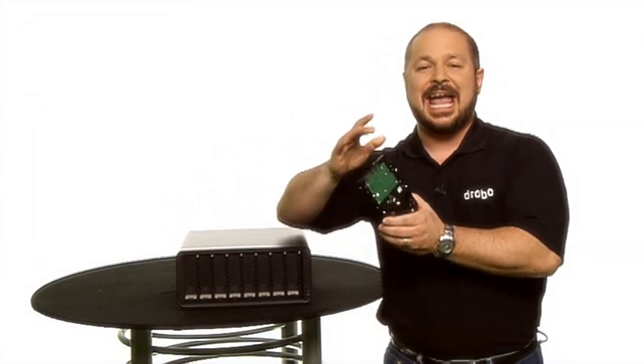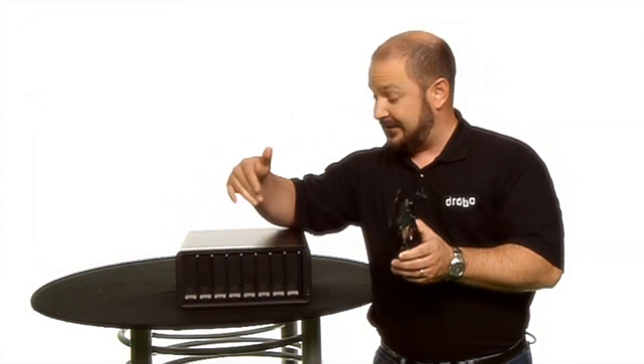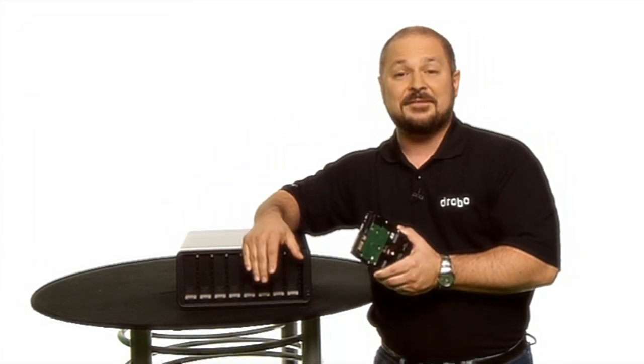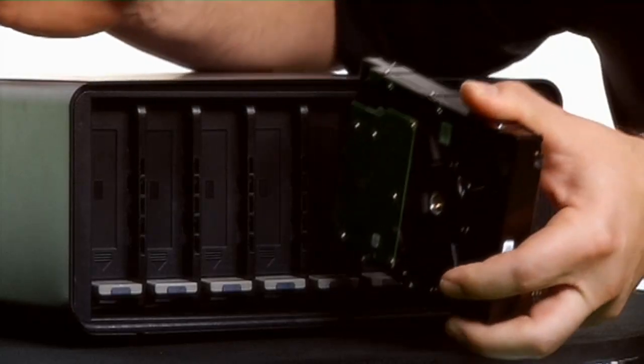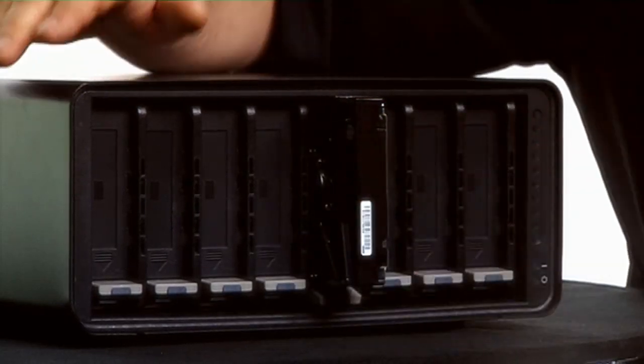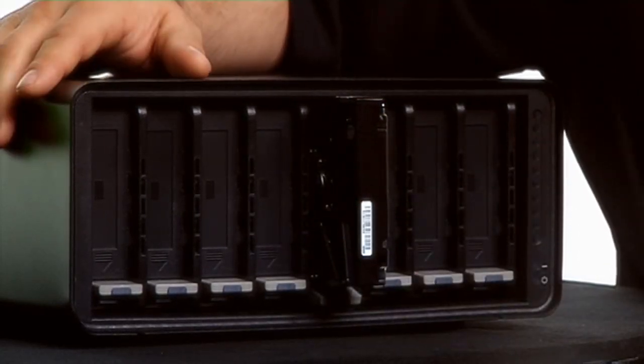Another thing that all Drobos are unique for is that we can use any 3.5 inch hard drive. In the case of our B800FS, any 3.5 inch SATA drive will do. You can put it into the system without any carriers. Just about anybody can do it.